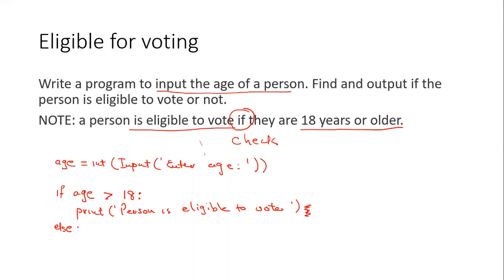And then here we're going to say else. So the else part means that when the if fails you're automatically going to go to the else. Else means print person is not eligible to vote.